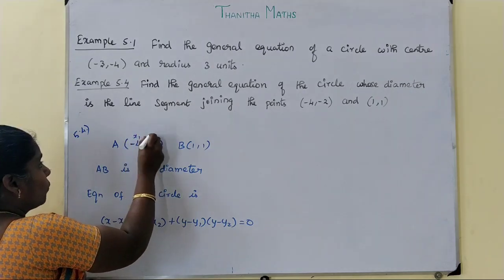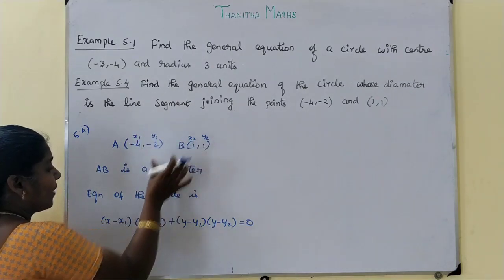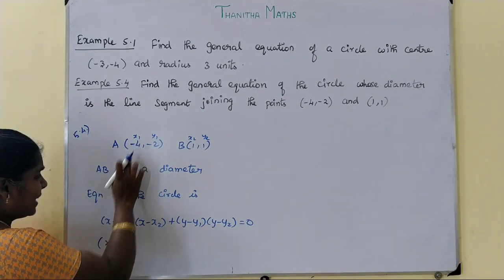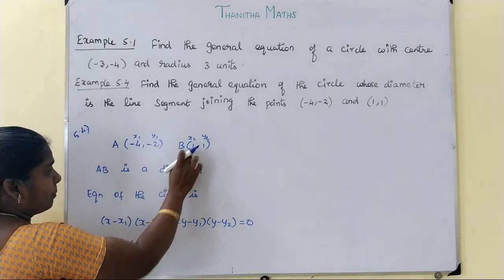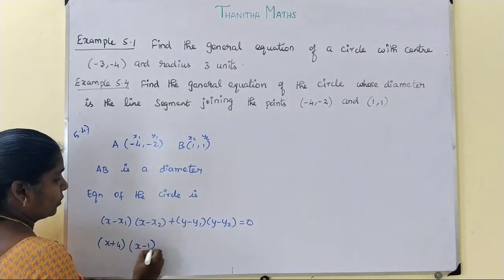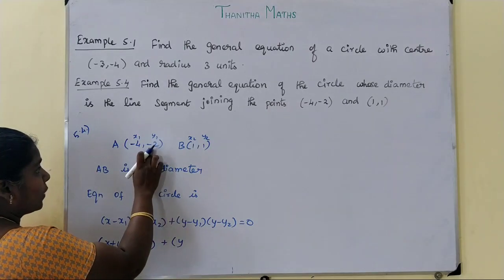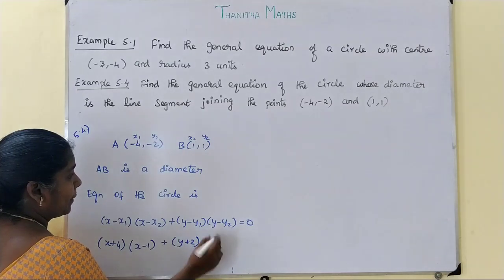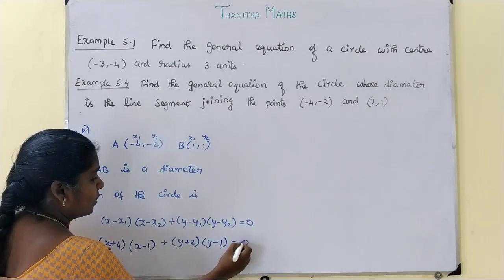Here x1, y1 is minus 4, minus 2 and x2, y2 is 1, 1. Substituting the values: x minus x1 becomes x plus 4, x minus x2 becomes x minus 1, y minus y1 becomes y plus 2, and y minus y2 becomes y minus 1, equal to 0.